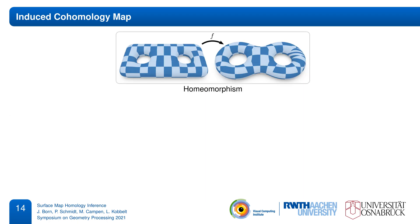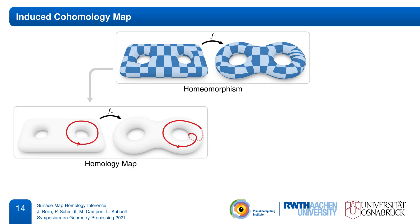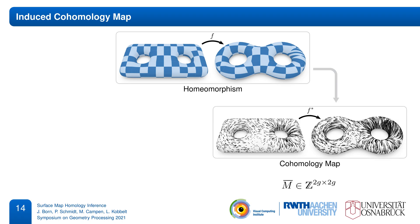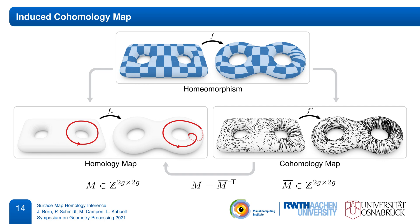Just as a homeomorphism between two surfaces induces a homology map by mapping cycles, it also induces a cohomology map by mapping co-cycles. For a given basis, the homology map is represented by an integer matrix, and we can do the same for the cohomology map. Due to our dual choice of bases, we can easily convert between homology and cohomology maps — one is simply the inverse transpose of the other. This allows us to perform our map inference in the cohomology setting, and then just convert the result to a homology map.